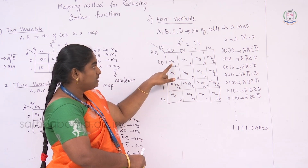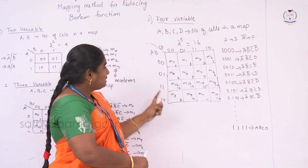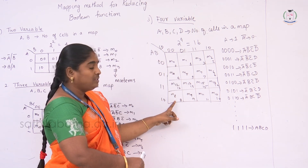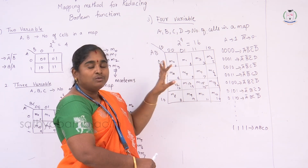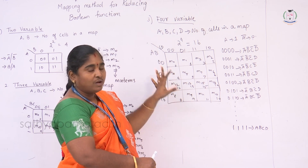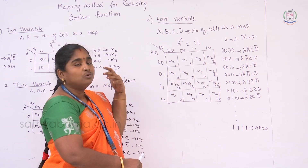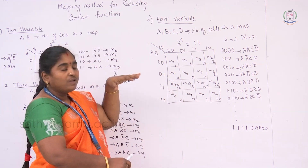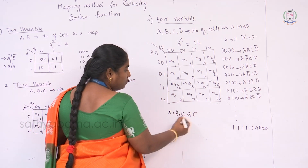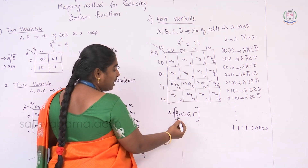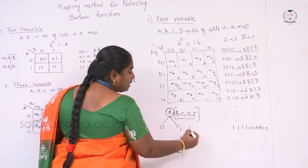Min terms are placed according to their binary positions: 0,0,0,0 is min term 0; 0,0,0,1 is min term 1 in the second cell, and so on. The combination 1,0,0,0 corresponds to min term 8. This design is fixed and represents the standard 4-variable K-map. For a 5-variable K-map, a small change is made — since there are 5 variables A, B, C, D, E — one variable is left alone, and two 4-variable maps are combined.